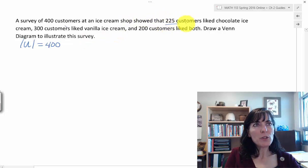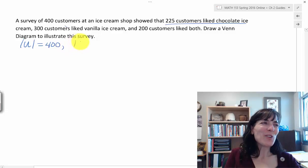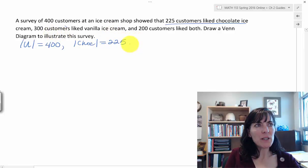The survey showed that 225 customers liked chocolate ice cream, so the cardinal number for chocolate is 225. 300 customers liked vanilla, so the cardinal number for vanilla is 300.